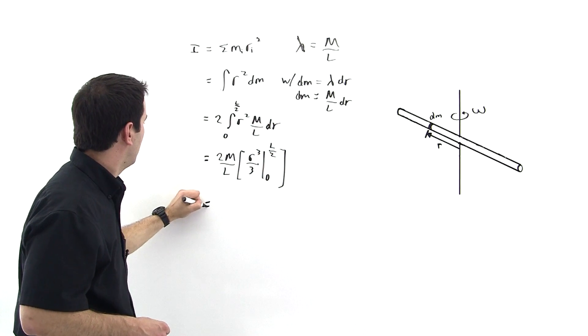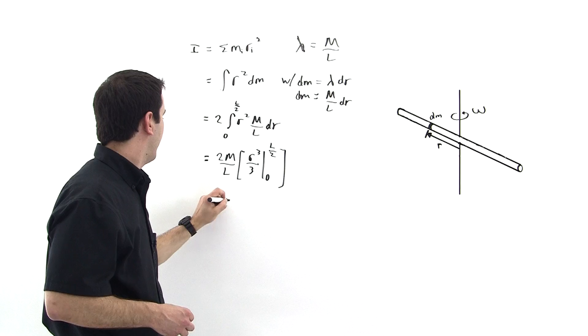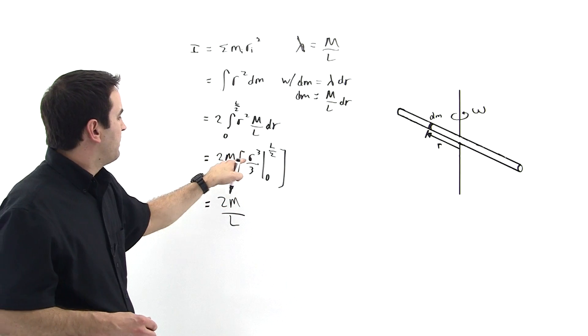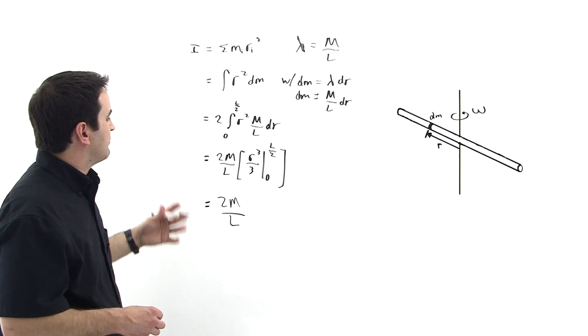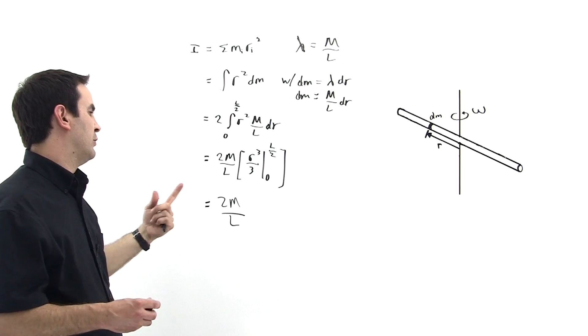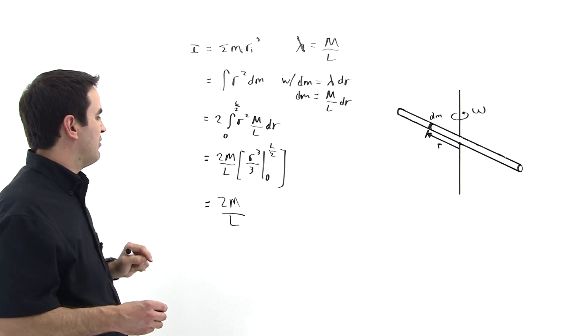Like so. So this is 2m over l. And then evaluate r cubed at l over 2 and then subtract r cubed over 3. Well, evaluate r cubed over 3 at l over 2 and then subtract r cubed over 3 evaluated at 0.